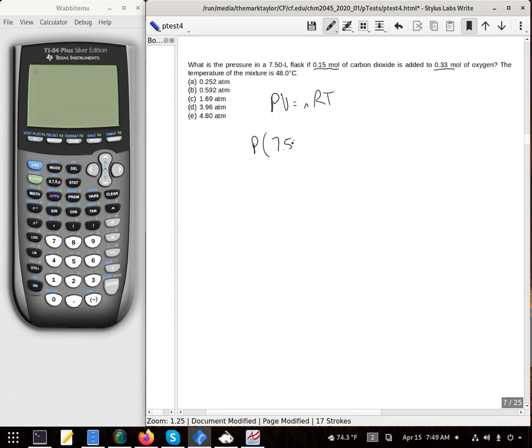We have 7.50 liters. Our N is 0.15 plus 0.33 moles. R is that 0.08206 and this is 273.15 plus that 48.